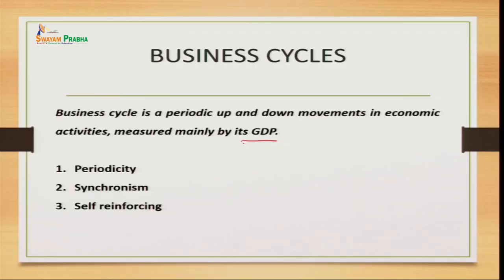If goods and services produced are less than required or demand is reducing, definitely production will be less — our economy is in a downward phase. But when demand for goods and services is more, production will be more — our economy is in an expansion phase. To understand the features of business cycle, we have classified them into three points: periodicity, synchronism, and self-reinforcing. Periodicity helps us understand that the up and down movements take place after a period of time — it does not happen overnight.